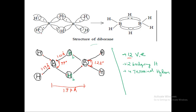Hydrogen has an s-type orbital — it is spherical. Boron has sp3 hybridization. The normal B-H terminal bond length is 1.19 Angstroms. The bond angle between terminal hydrogens is 122 degrees, whereas the H-B-H angle on the bridging side is 97 degrees. The bridging B-H bond length is 1.23 Angstroms.